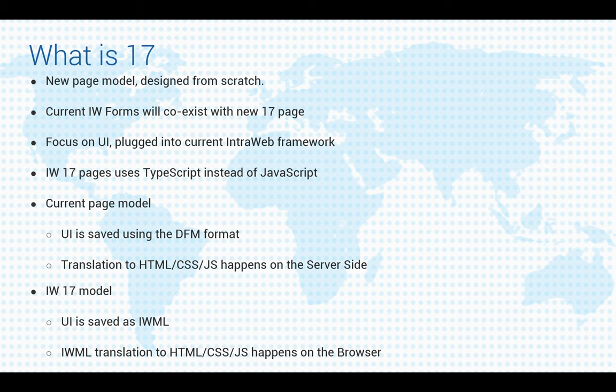IntraWeb 17 uses TypeScript instead of JavaScript. In the version 15 model, the UI is saved in DFM format and translation from DFM to HTML, CSS, and JavaScript happens on the server. For version 17, the UI is saved using a new format called IWML and this translation happens on the browser. Because translation happens on the browser, we use less CPU on the server side, have less data being transferred to the browser, and our rendering engine is way simpler. In version 17 we use DOM manipulation for that.